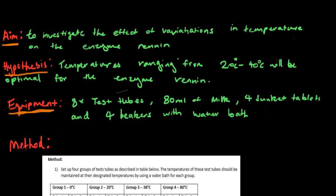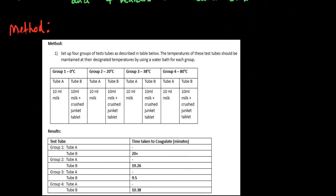In the method, set up four groups of test tubes as described in the table. The temperatures should be maintained at designated levels using water baths: one at zero degrees, one at 20 degrees, one at 38, and one at 80 degrees. We have two test tubes in each group, one with 10ml milk and one with 10ml milk with crushed junket tablet. Junket tablets contain renin.